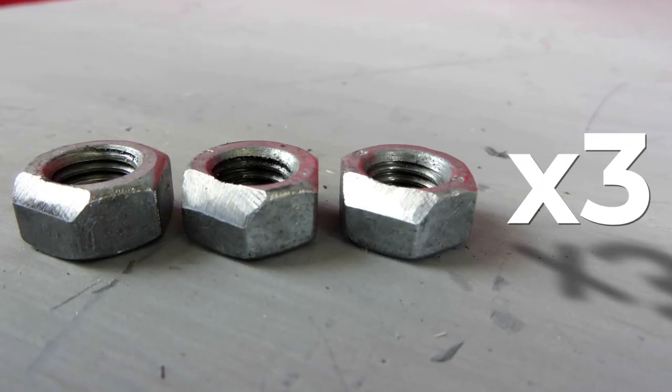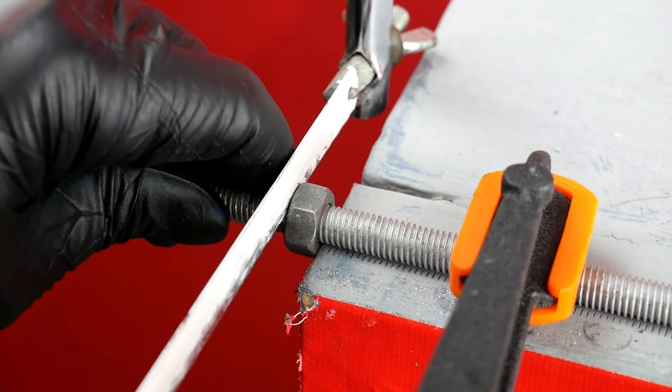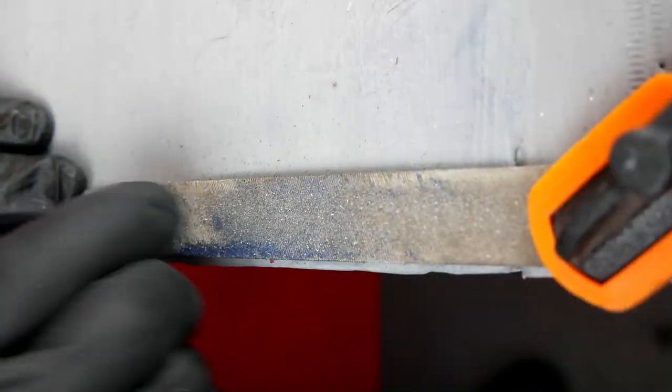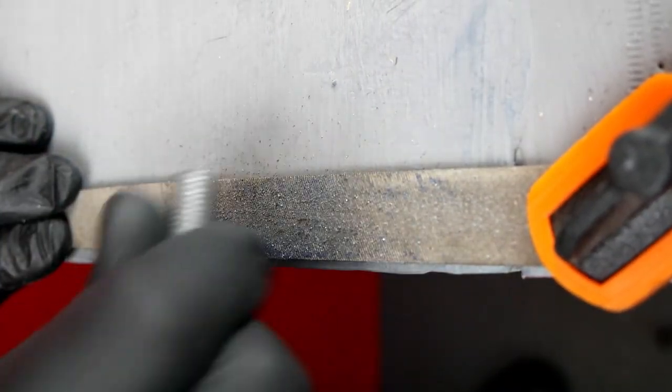And I make three of these. I cut off two 50mm lengths of threaded rod with a hacksaw, and I take off any sharp edges with a file.